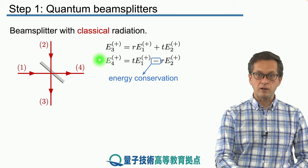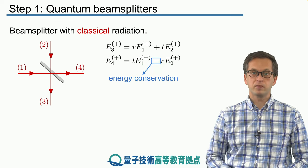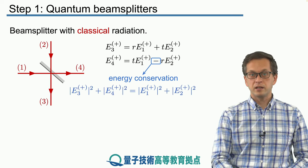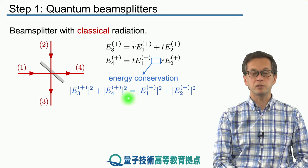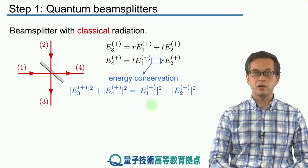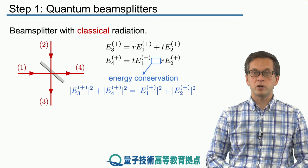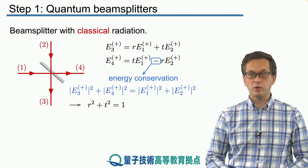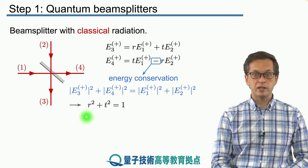For E4 we write T times E1 minus R times E2, and this is due to energy conservation. This minus ensures that the intensity at the output — that is, mode 3 and 4, given by the modulus squared of E3 plus the modulus squared of E4 — is equal to the intensity of the light at the input ports, modulus squared of E1 plus modulus squared of E2. We require this condition because we are considering only lossless beam splitters in this lesson. When you plug in the equations you arrive at the following relationship that must hold between the reflection and transmission coefficients.